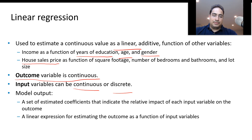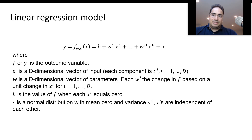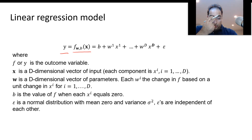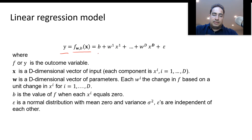This is how a linear regression model looks. You have your output and a function that you want to estimate. This function is based on two parameters: w, which is a vector of parameters or coefficients, and b, which is a bias. You provide x, the input, and it will calculate the function output.